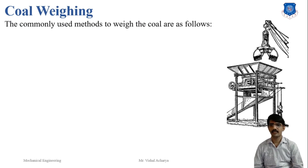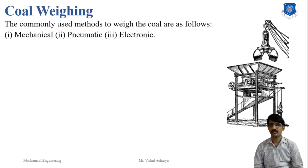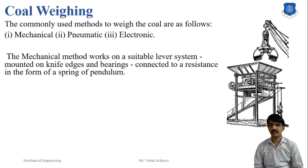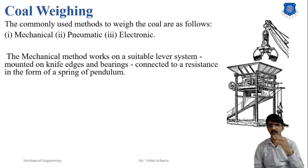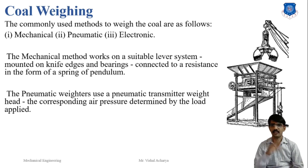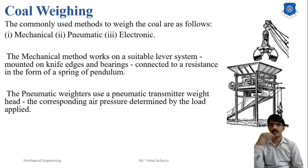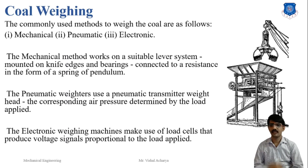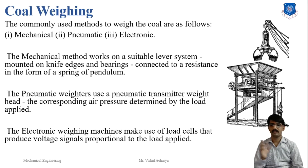Coal weighing is the commonly used method to check the quantity of coal before entering the boiler. Three systems are used: mechanical, pneumatic, and electronic. The mechanical method works on a suitable lever system mounted on knife edges and bearings, connected to a resistance in the form of a spring or pendulum. The pneumatic weigher uses a pneumatic transmitter weight head; the corresponding air pressure is determined by the load applied calibration. The electronic weighing machine uses a load cell that produces a voltage signal proportional to the load applied.